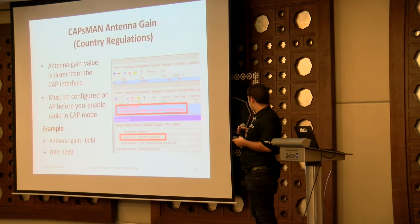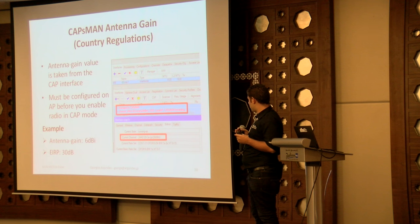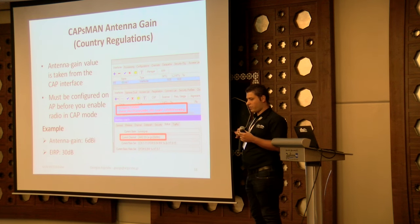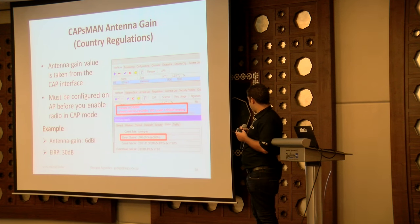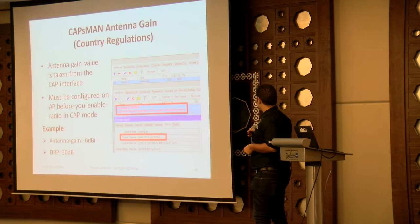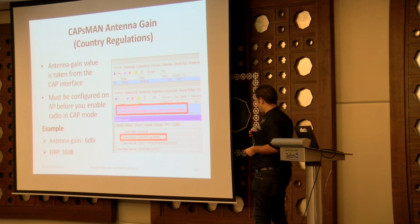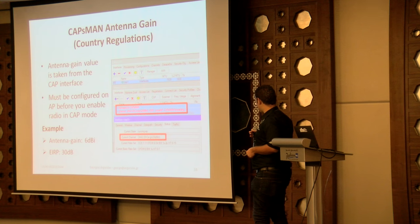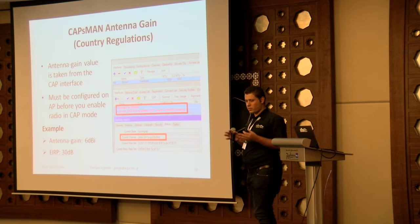You need to know which country you operate in and configure CAPsMAN to follow local regulations for transmit power and frequencies — this can be done automatically. For example, this is probably set for the US where the maximum transmit power is 1 watt, but this access point has a 6 dBi antenna, so CAPsMAN will lower the power to 24 dBm to stay within legal regulations.